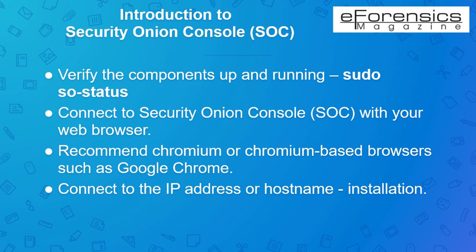Security Onion also has a new SO Analyst script that will optionally install a GNOME desktop environment, Chromium Web Browser, Network Miner, Wireshark, and many other analyst tools. Once you've run SO Allow after installation in the Module 1 exercise, you can then connect to the Security Onion Console with your web browser using an IP address or host name as shown in the next slide.